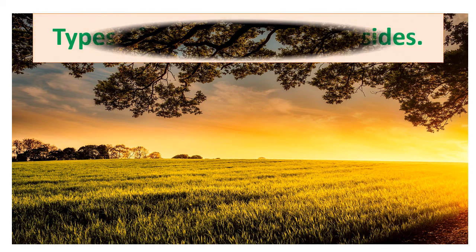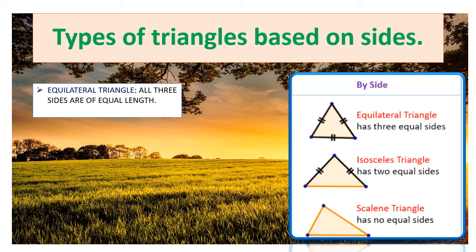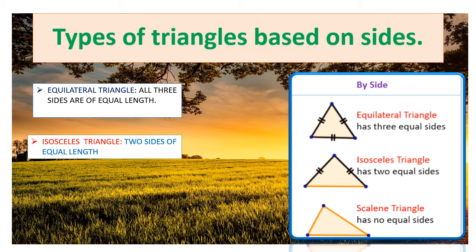And types of triangles based on sides. One, equilateral triangle has three equal sides. And also all three sides are of equal length. And isosceles triangle.